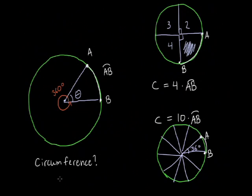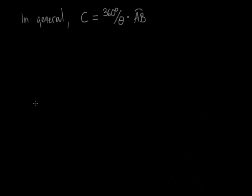In general, the circumference of the circle is given by the number of pieces we have times the length of one piece. Writing this out explicitly, the number of pieces is 360 degrees divided by theta, the angle that A and B make with the center of the circle. The length of one piece is simply AB. So if we just know these two things, the arc AB and the angle A and B make with the center of the circle, we can determine the circumference. This is really the heart of Eratosthenes' method.